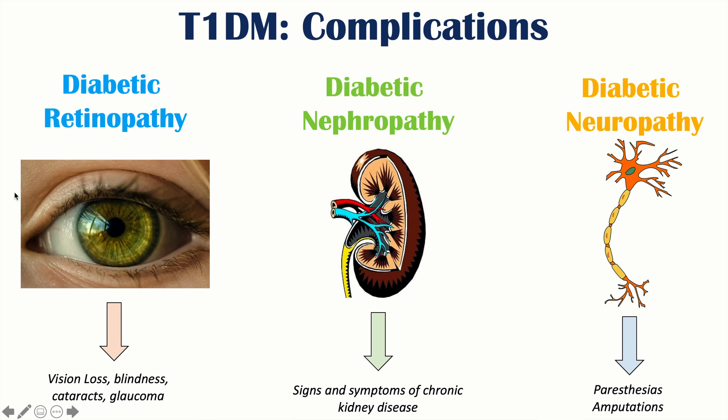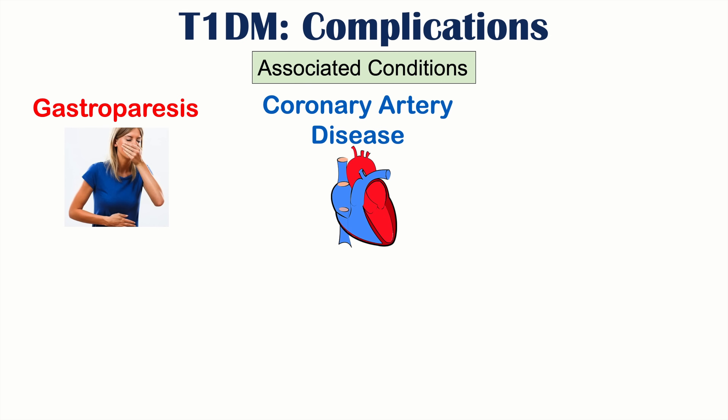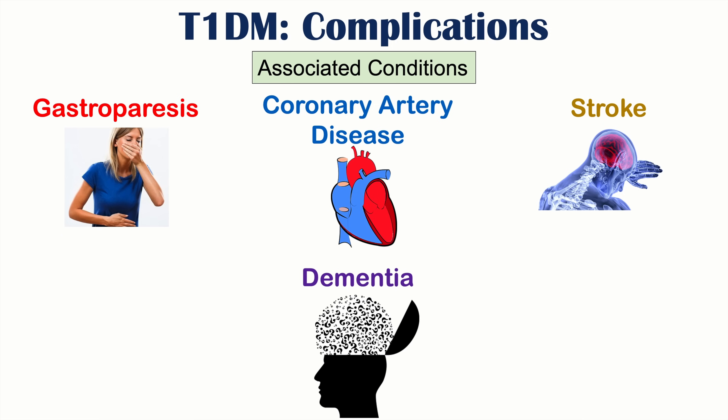Because of diabetic neuropathy, patients may not sense injuries, and combined with poor blood circulation and delayed wound healing, they have increased susceptibility to amputations. Associated conditions include gastroparesis — stomach paralysis due to vagus nerve neuropathy — causing chronic nausea and vomiting. Patients with diabetes are also at increased risk for coronary artery disease, stroke, and dementia later in life.